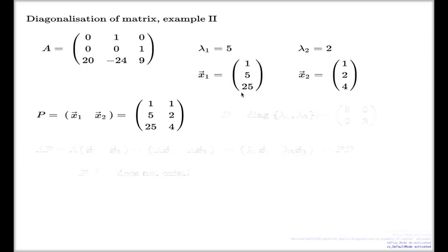This vector is the first column and this vector is the second column. My diagonal matrix D consists of the eigenvalues as entries on the diagonal: 5 and 2.